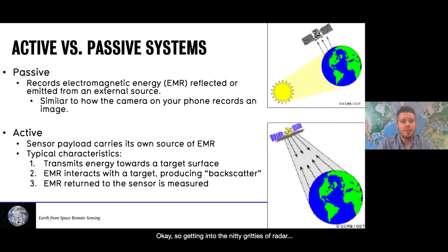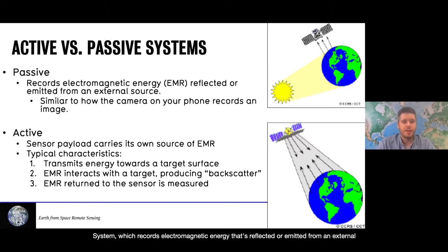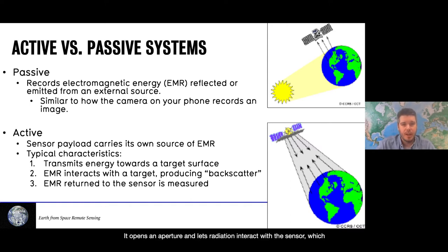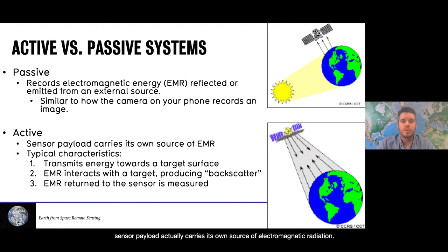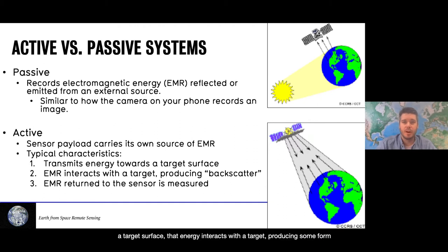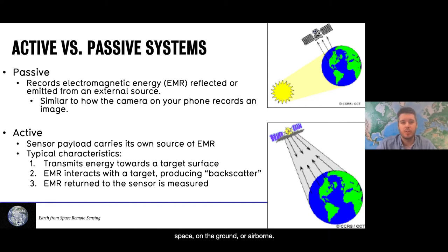Getting into the nitty gritty of radar: there are two types of systems in remote sensing. A passive system records electromagnetic energy that's reflected or emitted from an external source — similar to how a camera on your phone records an image, opening an aperture and letting radiation interact with the sensor. In an active system, the sensor payload carries its own source of electromagnetic radiation. It transmits energy towards a target surface, that energy interacts with the target producing backscatter or returned energy, and then the returned energy is measured by the sensor — whether in space, on the ground, or airborne.